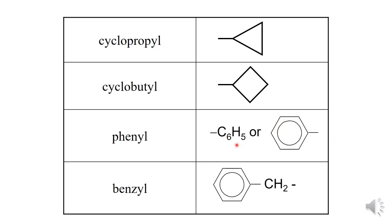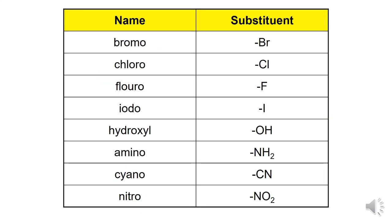Benzene or C6H5 as a substituent is called phenyl. Benzene or C6H5 as a substituent is also called benzyl. The substituent groups from elements of Group 17: Br is called bromo, Cl is called chloro, F is called fluoro, and I is called iodo. The OH group is called hydroxyl, NH2 is amino, CN is cyano, and NO2 is nitro.